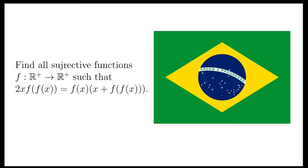Let's take a look at this problem, taken from the 2012 Brazil National Mathematical Olympiad. It says, find all surjective functions f mapping the set of positive reals to itself, such that 2x times f(f(x)) equals f(x) times (x + f(f(x))).